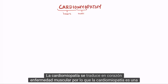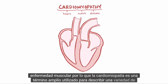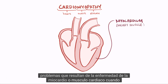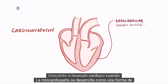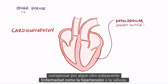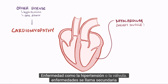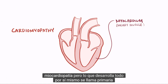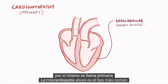Cardiomyopathy translates to heart muscle disease, so cardiomyopathy is a broad term used to describe a variety of issues that result from disease of the myocardium, or heart muscle. When cardiomyopathy develops as a way to compensate for some other underlying disease like hypertension or valve diseases, it's called secondary cardiomyopathy, but when it develops all by itself it's called primary cardiomyopathy.